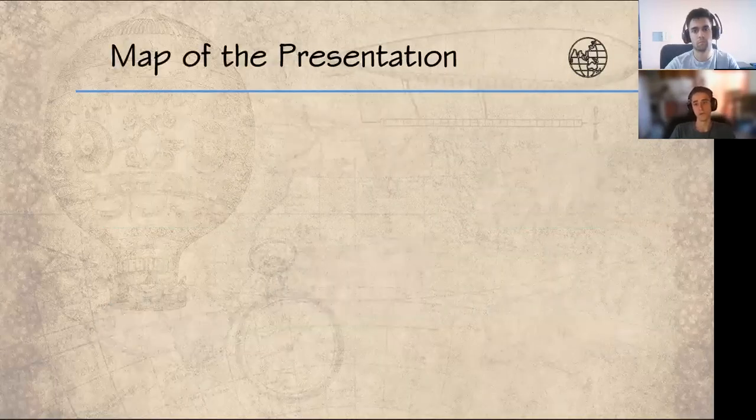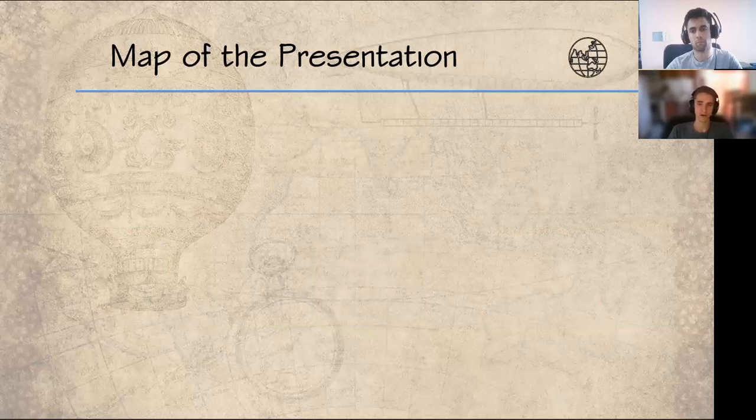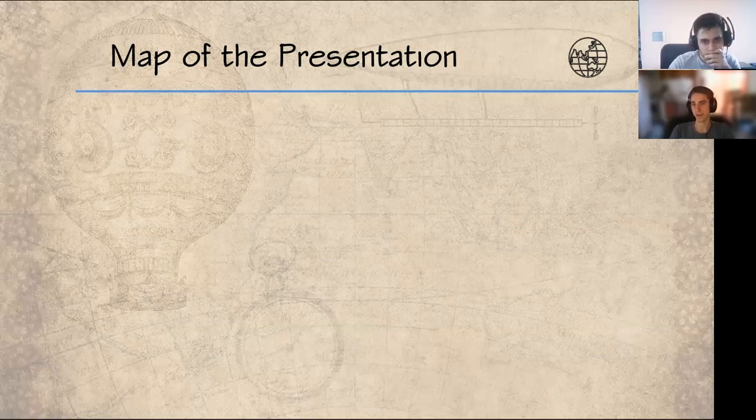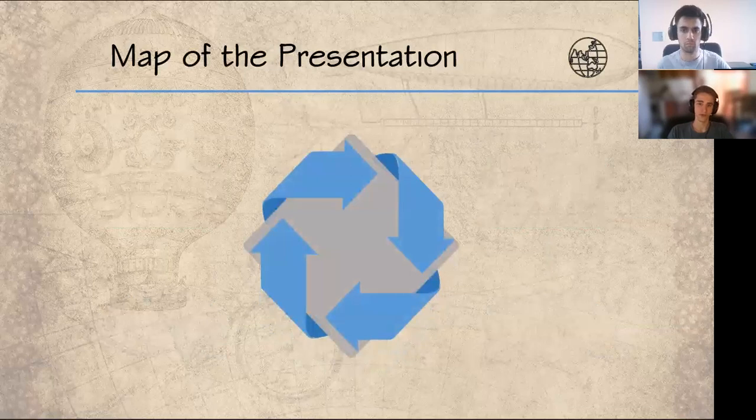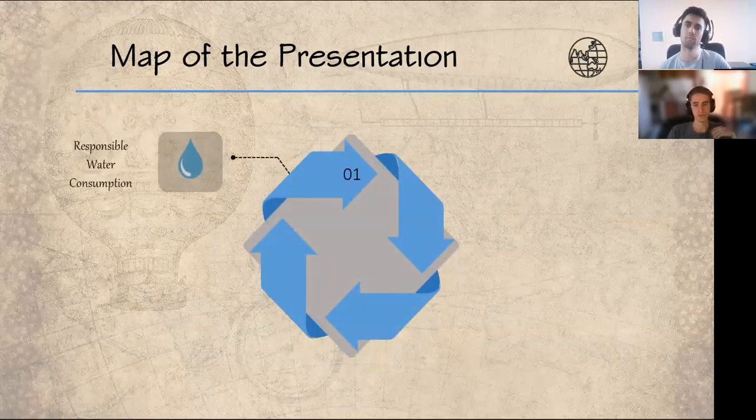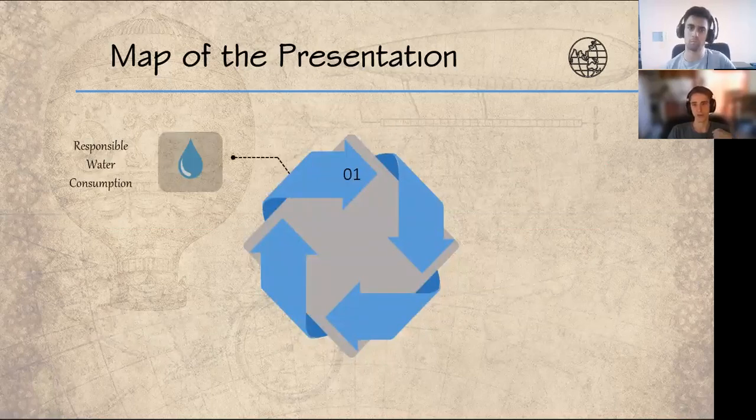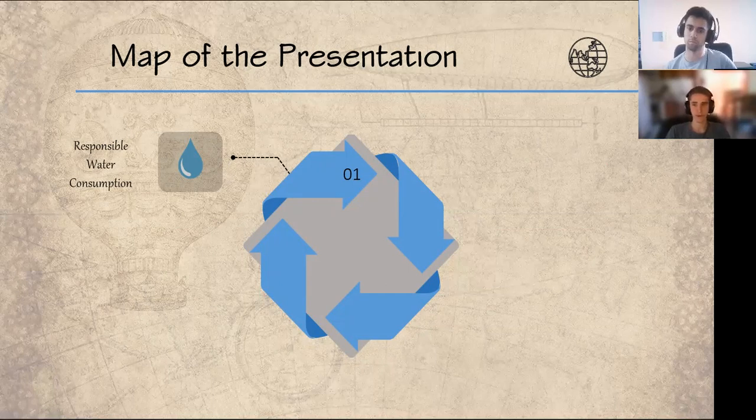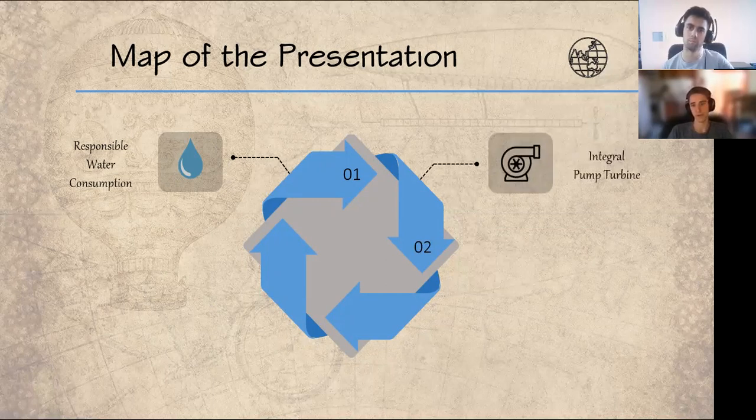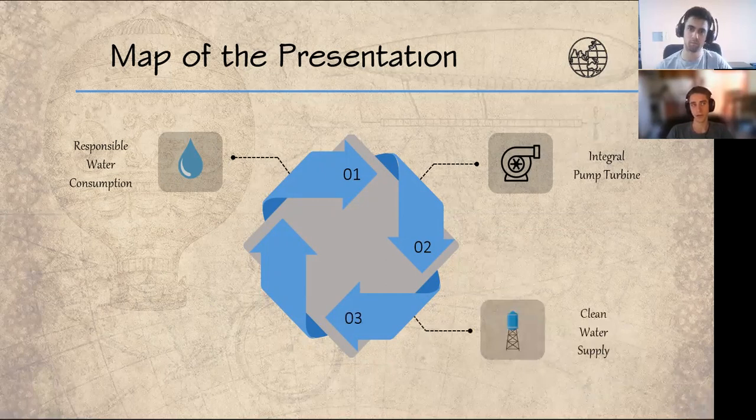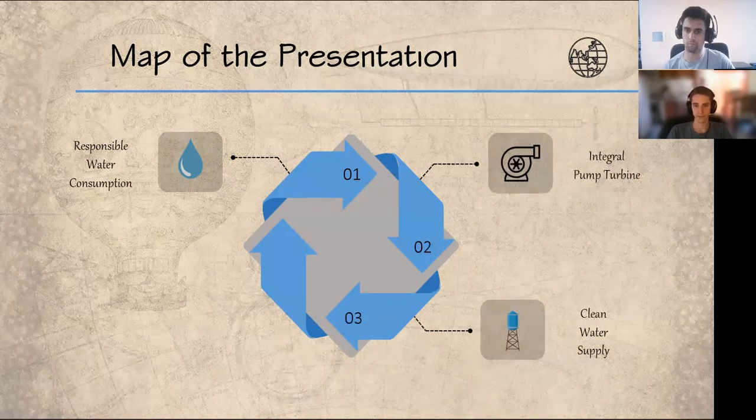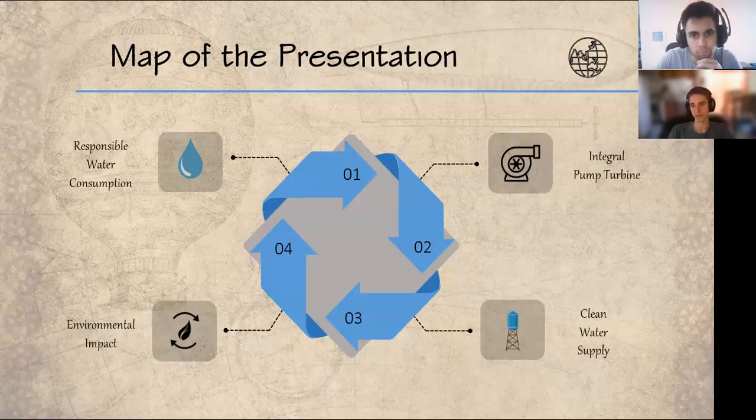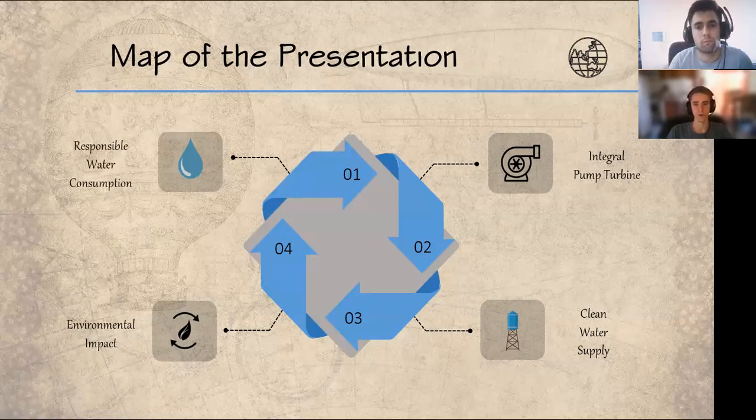To give you a better orientation of how the practical work is done, we show you the following map. In this, we will begin by explaining the importance of responsible water consumption. Then the operation of the integral pump turbine system will be developed considering the characteristics of the river. We will continue with the explanation of the filtering, transport and storage of the structure of water. And finally, the environmental impact that this project entails will be developed.